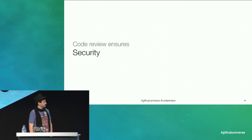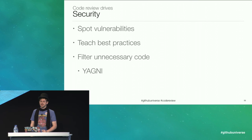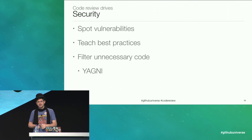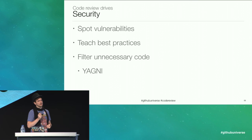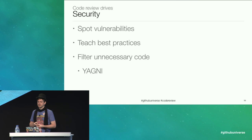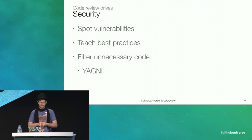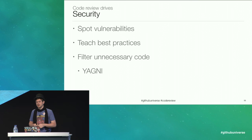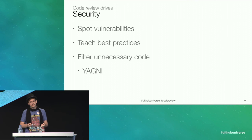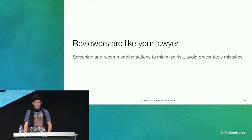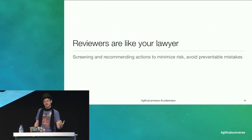Thirdly and lastly of the quality attributes, code review ensures security. We want to spot vulnerabilities before they ship and teach a defensive posture. The defensive posture is especially critical to teach new developers. Linus' law applies equally to security. But the best way to keep bugs and vulnerabilities out of the code is to call out unnecessary features — unnecessary bells and whistles. You ain't going to need it. In this situation, reviewers are like your lawyer — the person you run something by that sounds kind of stupid, and they say yeah, that's stupid, don't do that.